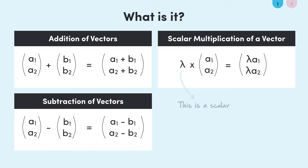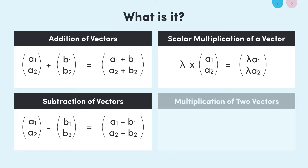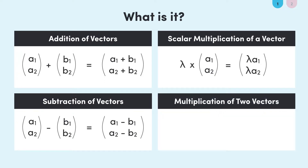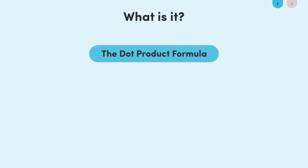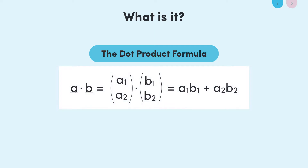The next logical question would be to ask whether we can multiply two vectors together. Does this even make sense? Well, that's where the dot product comes in. Using the same column vector notation for vectors A and B, this is the definition of the dot product. It's not really multiplication — it's a new operation which involves addition and multiplication.